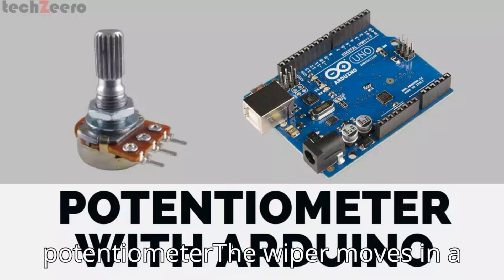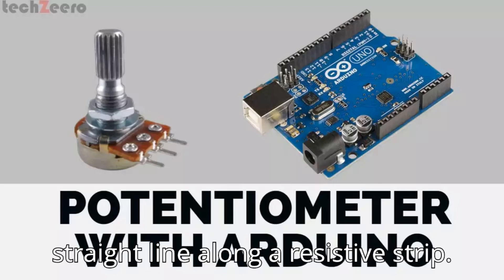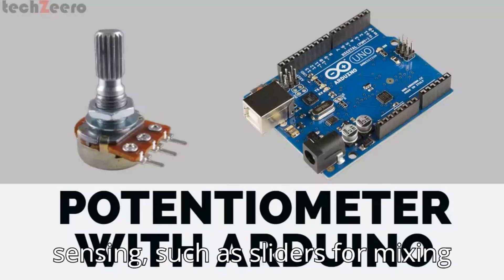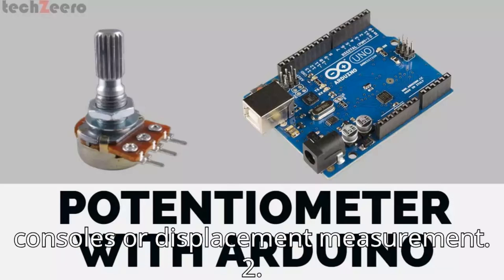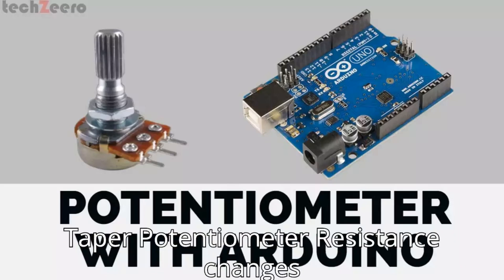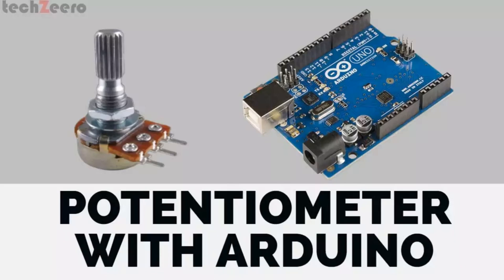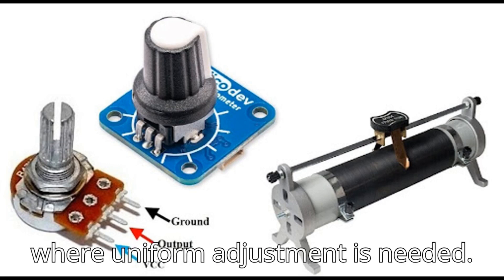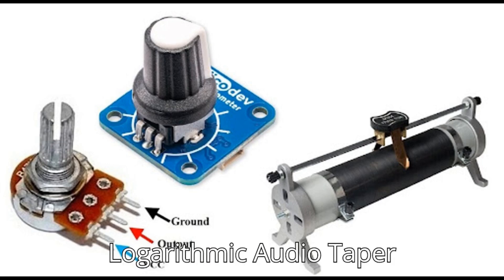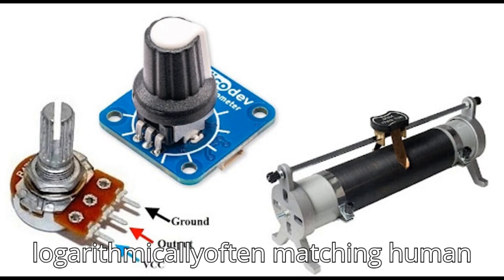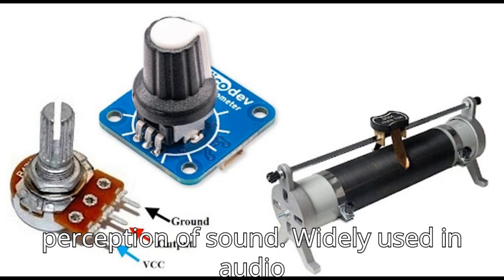The linear potentiometer has a wiper that moves in a straight line along a resistive strip, used in applications requiring position sensing such as sliders for mixing consoles or displacement measurement. Based on resistance variation: the linear taper potentiometer changes resistance linearly with the wiper's position, used in position sensing or control systems where uniform adjustment is needed. The logarithmic (audio) taper potentiometer changes resistance logarithmically, often matching human perception of sound, and is widely used in audio volume controls.